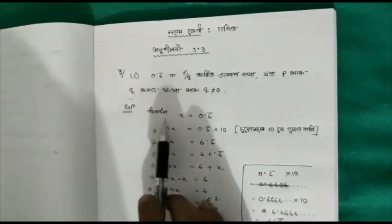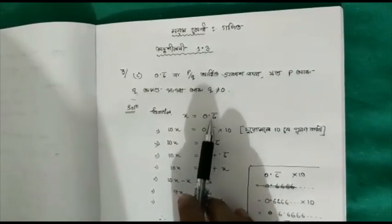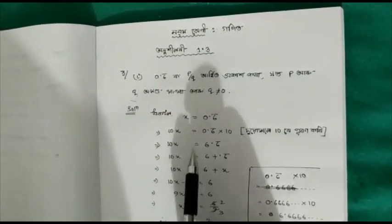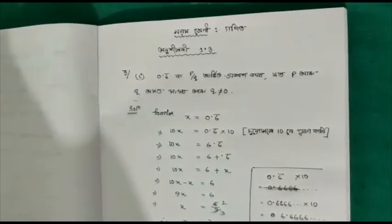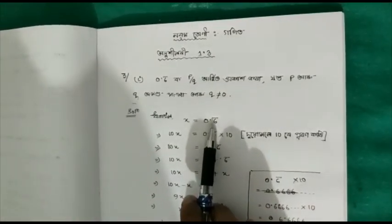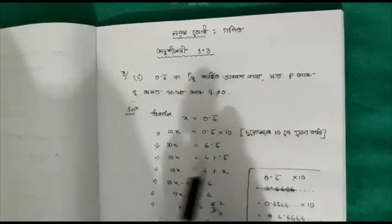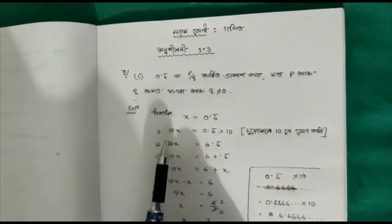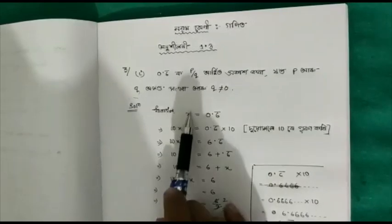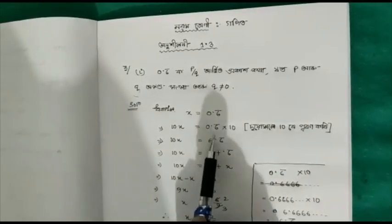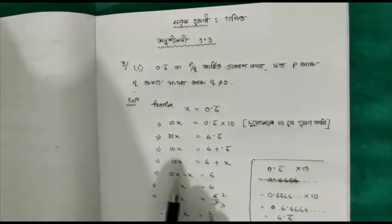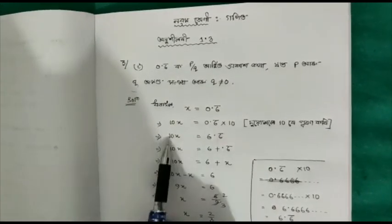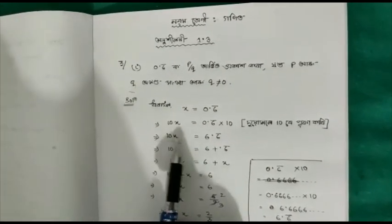તો ધારો કે x equals 0.6 repeating. આપણે સમીકરણ બનાવીશું અને તેને હલ કરીશું.